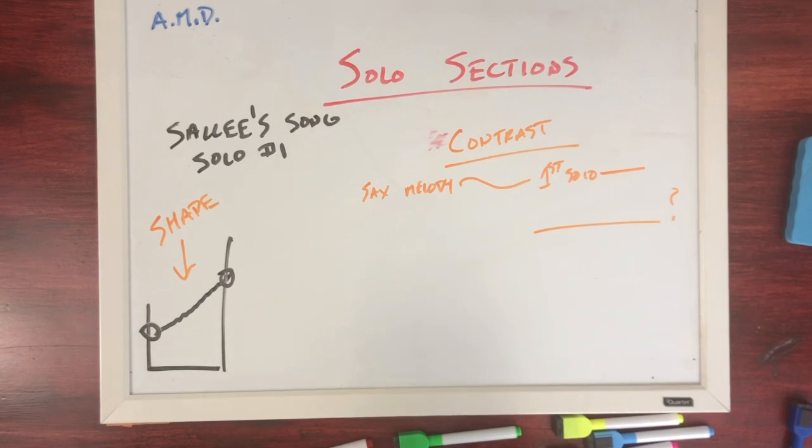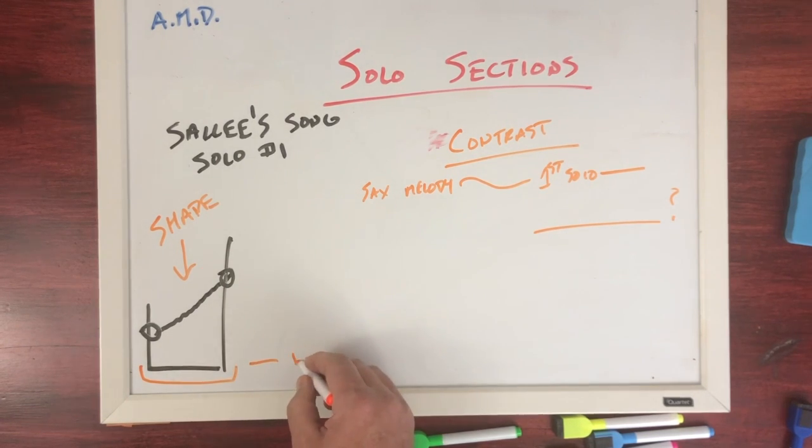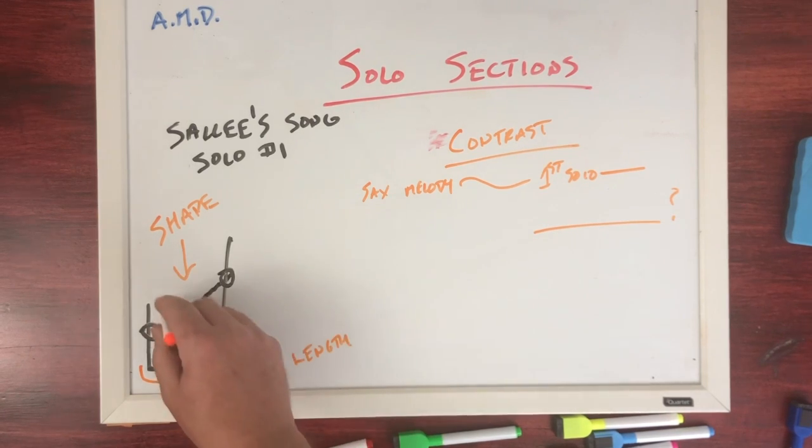Secondly, I'm going to take a look at the shape that I had originally drawn for this particular part of the song, which is basically just like a line moving up. I want the solo to feel energetic and sort of continue to build and build and build until we get to the next section.